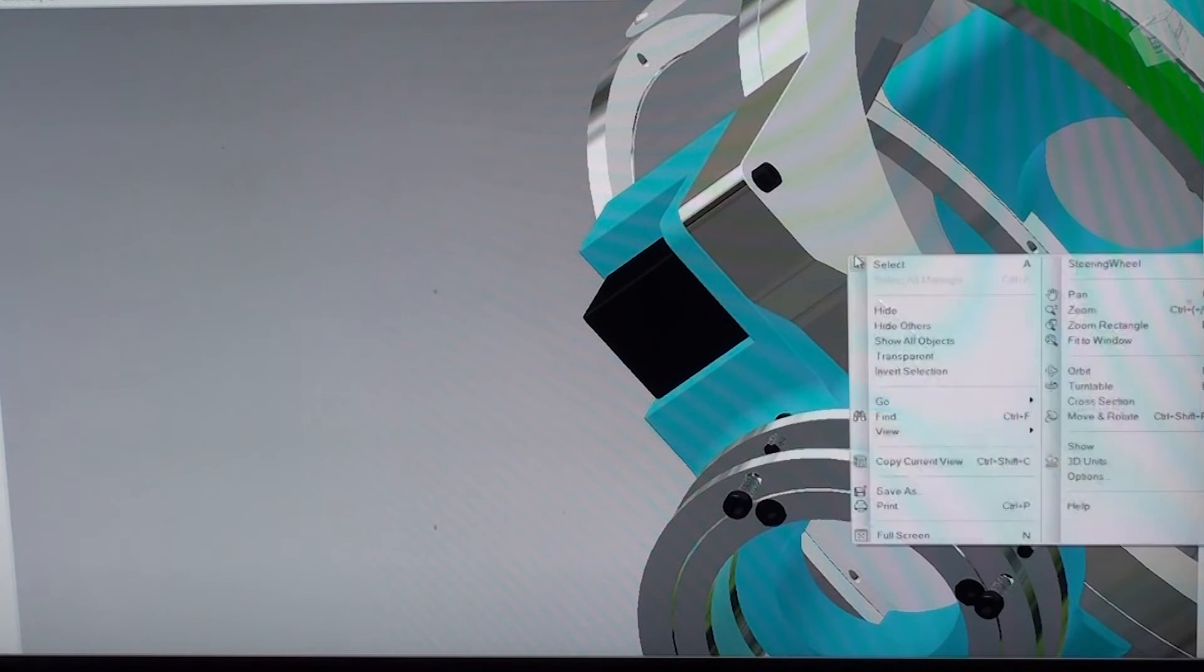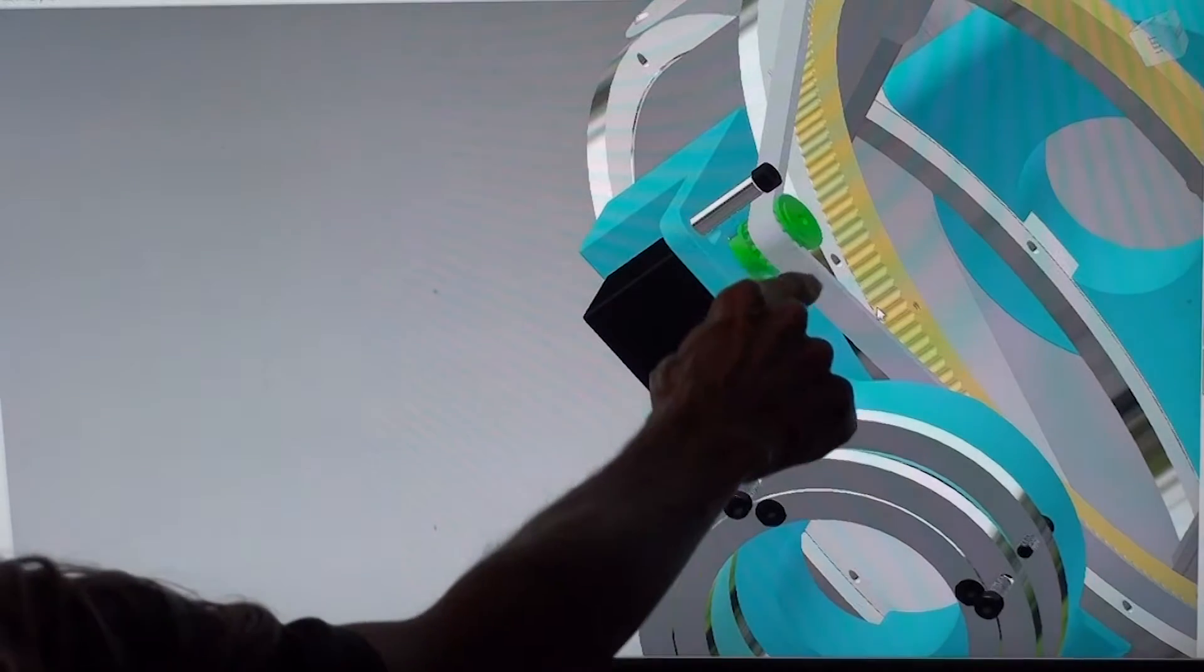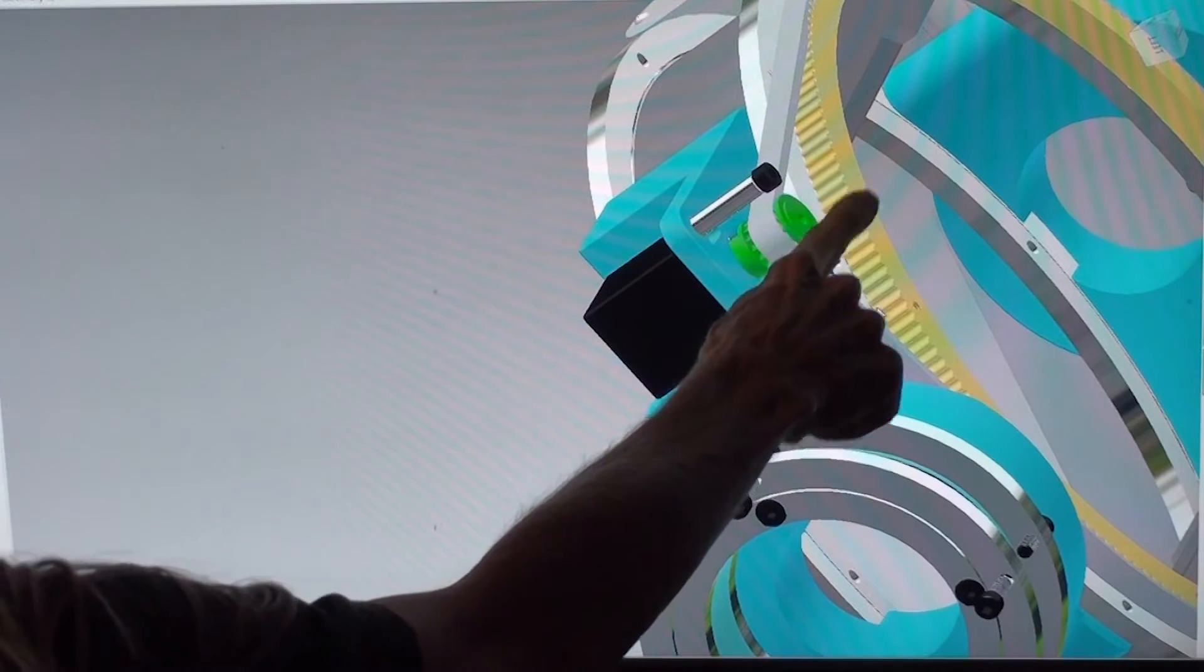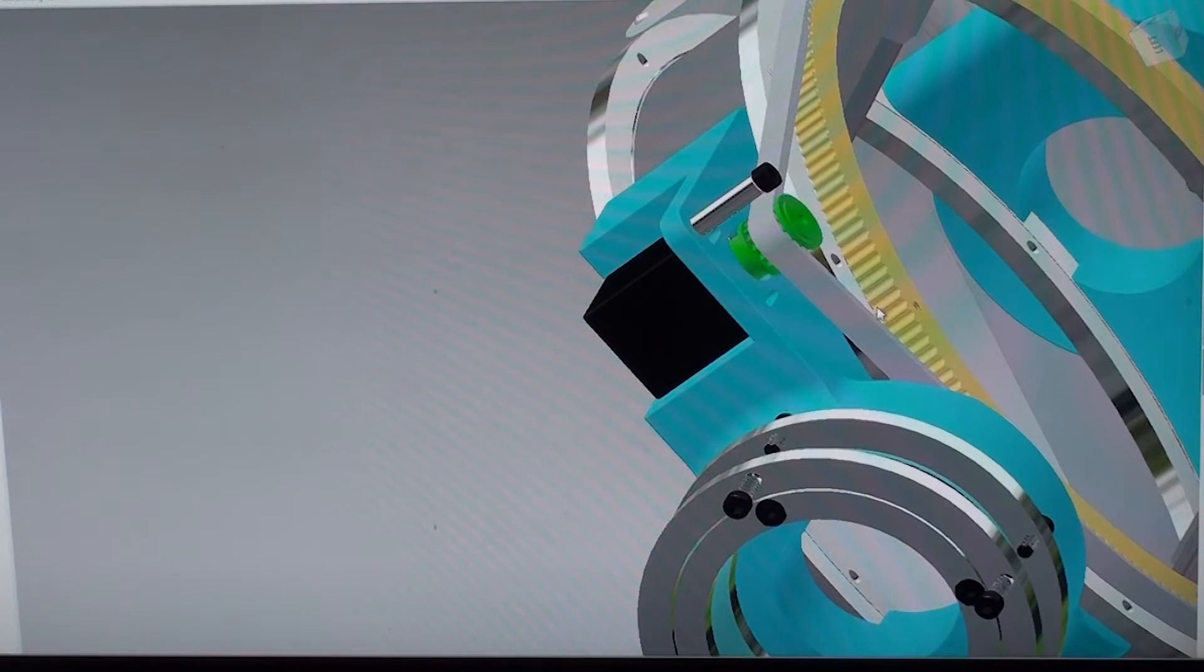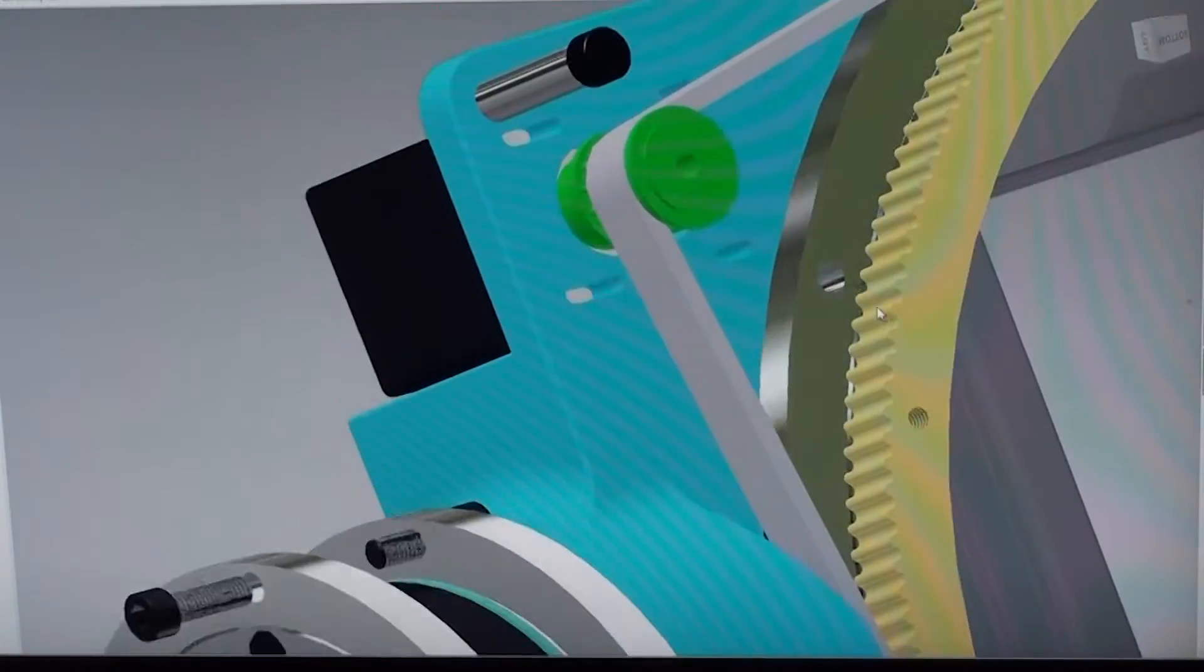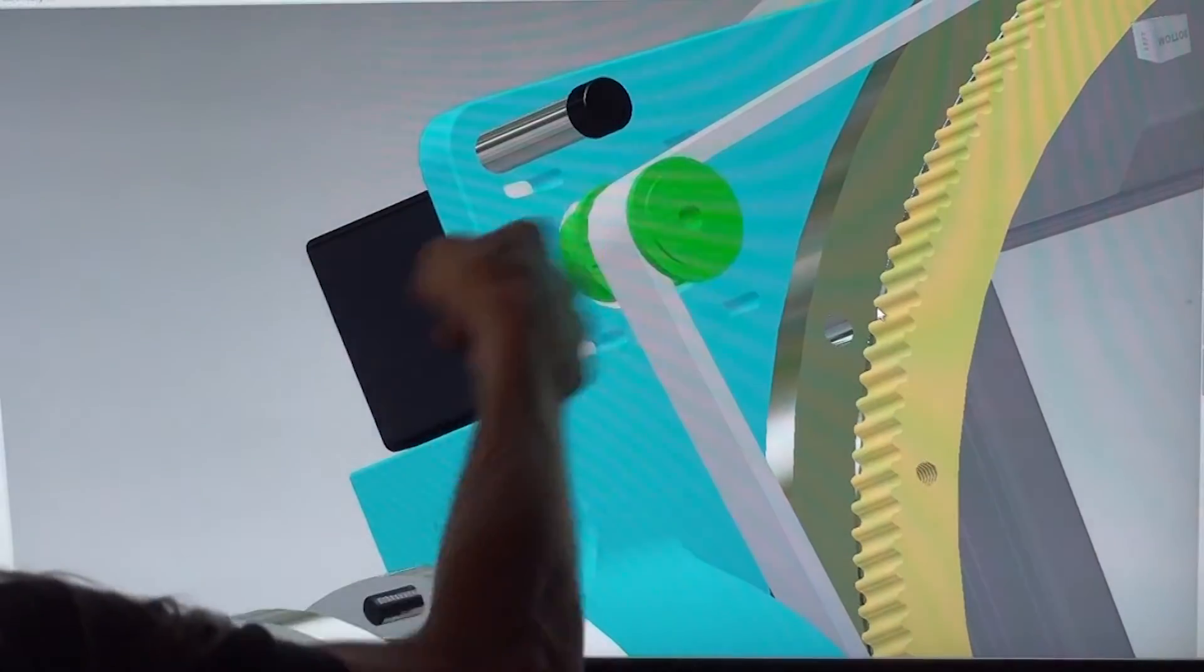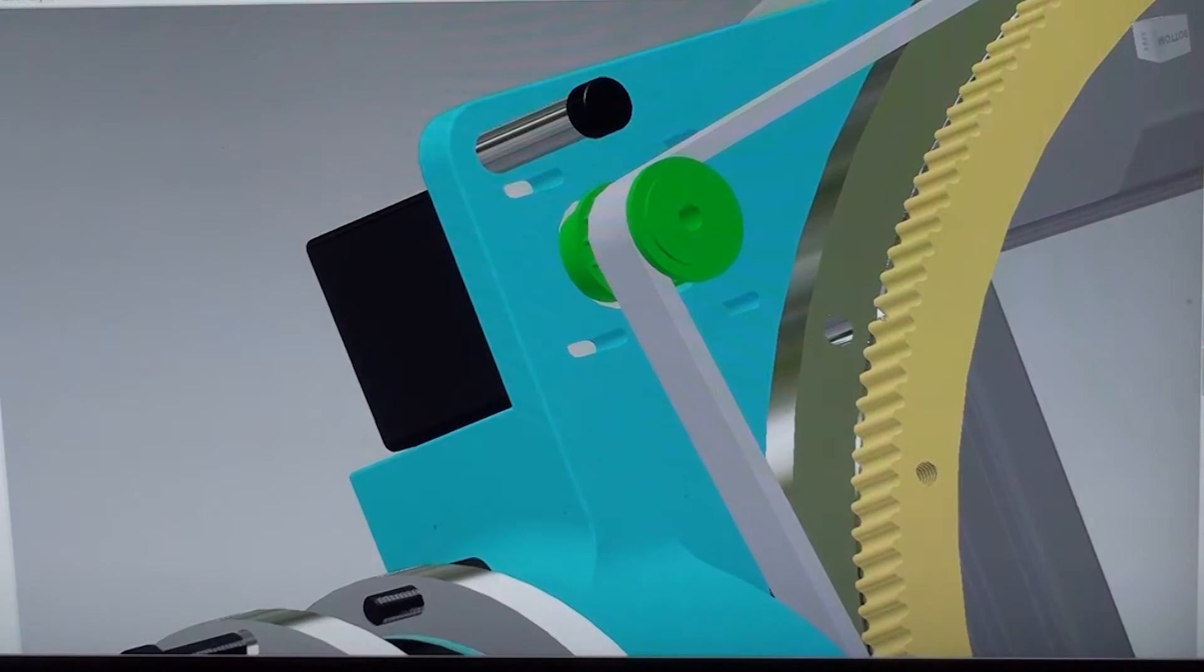This is the drive for the roll. Stepper motor, pinion pulley, and a big pulley on the roll bearings. This belt is tensioned by sliding the motor over and then tightening the screws that hold it.